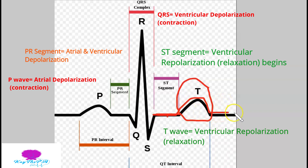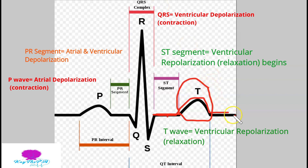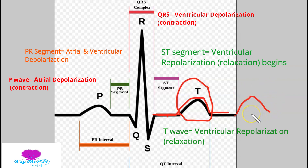After the T wave, we can sometimes have something called a U wave. A lot of people aren't sure exactly what it means, but it usually comes after the T wave and it's not always present — I rarely see it. If you do see it, it's not cause for alarm; it's just something that's occasionally there.